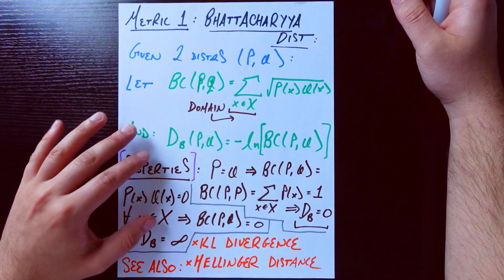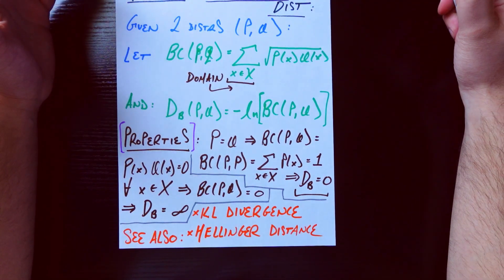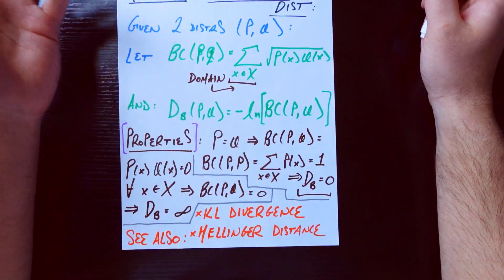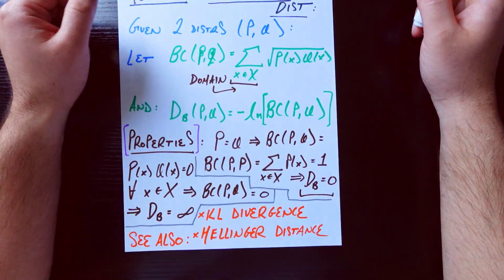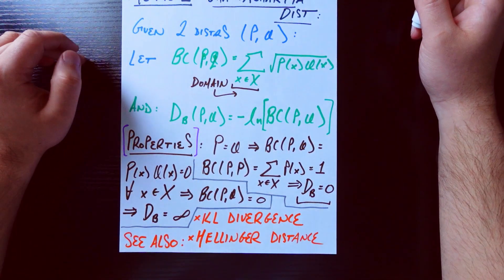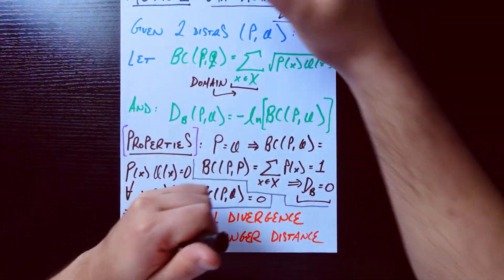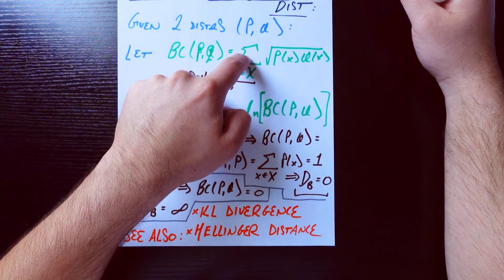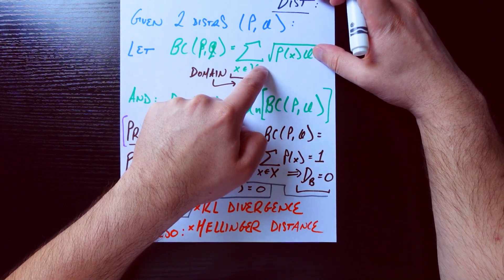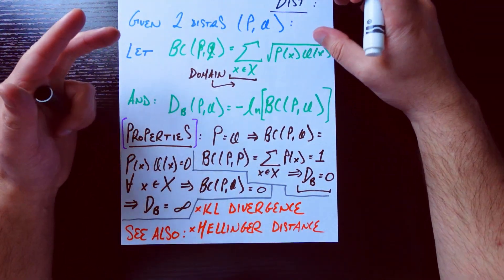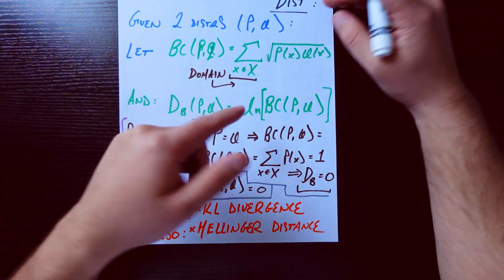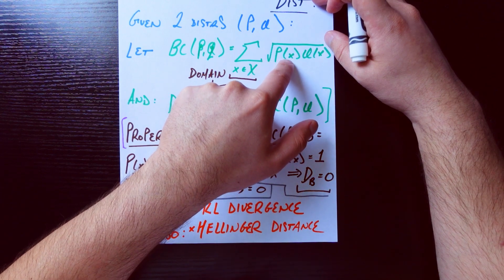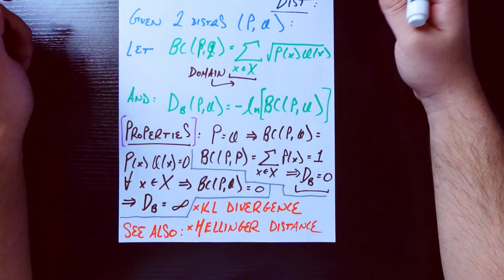So this metric is called the Bhattacharyya distance. Given two distributions, it doesn't matter if they're discrete or continuous, although we'll just assume they're discrete for this video to make things a little bit simpler—it's just that these sums become integrals, you know the drill. If we have two distributions P and Q, the first thing we define is BC, which comes from B and C. BC of P and Q is given by the sum across all elements on these domains. So this assumes that these two distributions share at least part of their domain—the sum across their common domain elements of the square root of P(x) times Q(x).